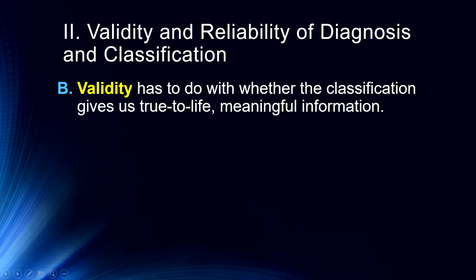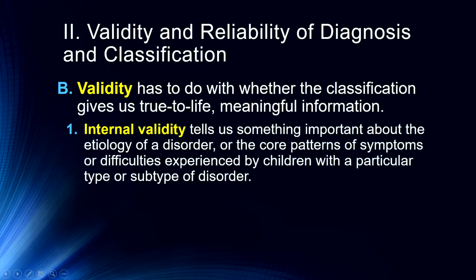Validity of diagnosis in children is especially difficult because children are so rapidly changing. Internal validity tells us whether we have a good handle on the etiology of the disorder — what's causing it and what the core patterns of symptoms are for children with a particular type or subtype. We can use diagnosing different types of pneumonia as an analogy. In April 2020, during the COVID-19 outbreak, there was a lot of discussion about accurately distinguishing pneumonia, flu, and COVID-19 — thinking about false positives and false negatives.